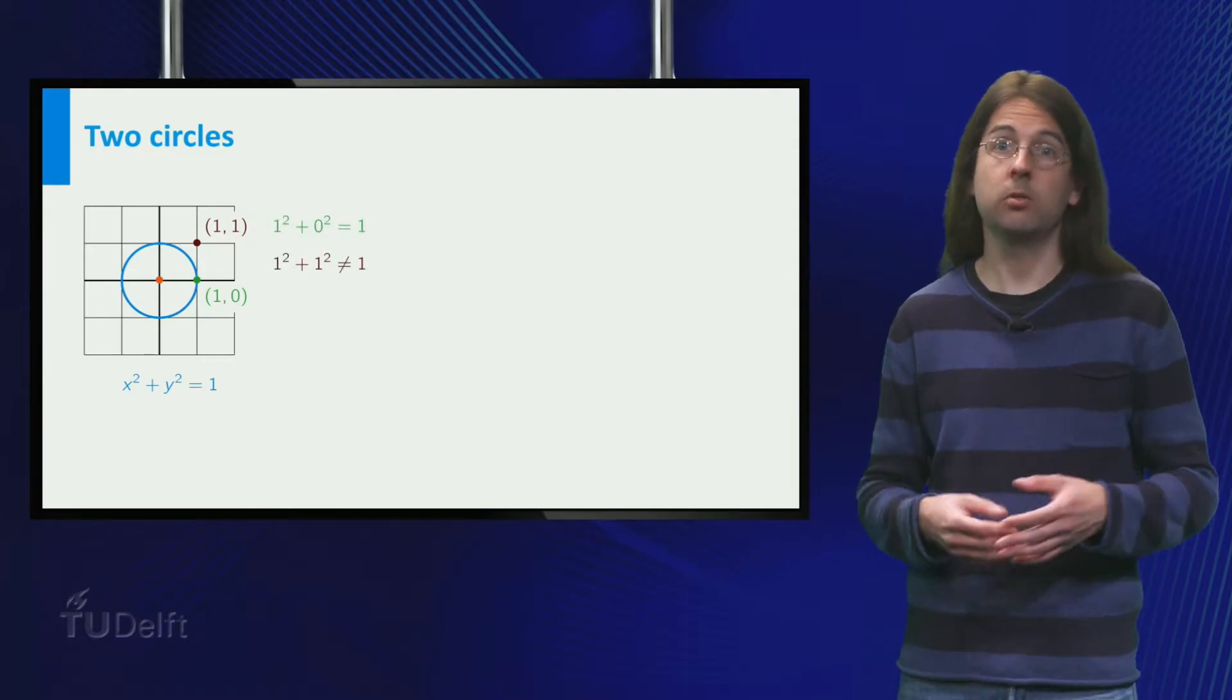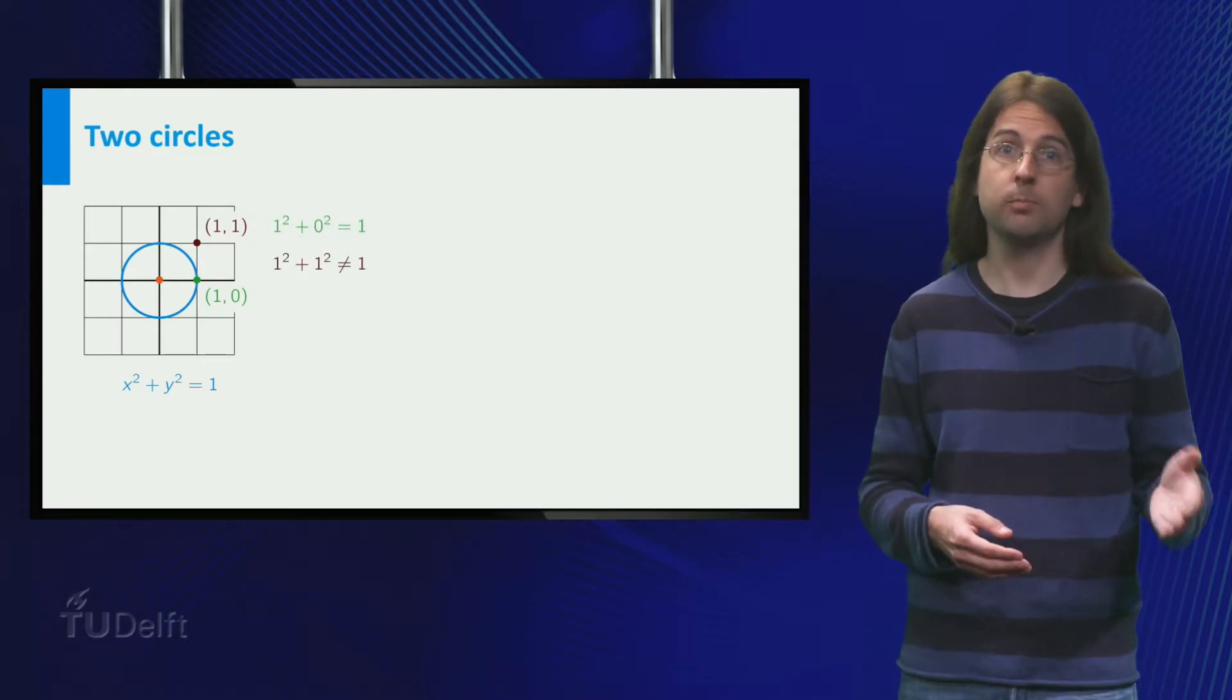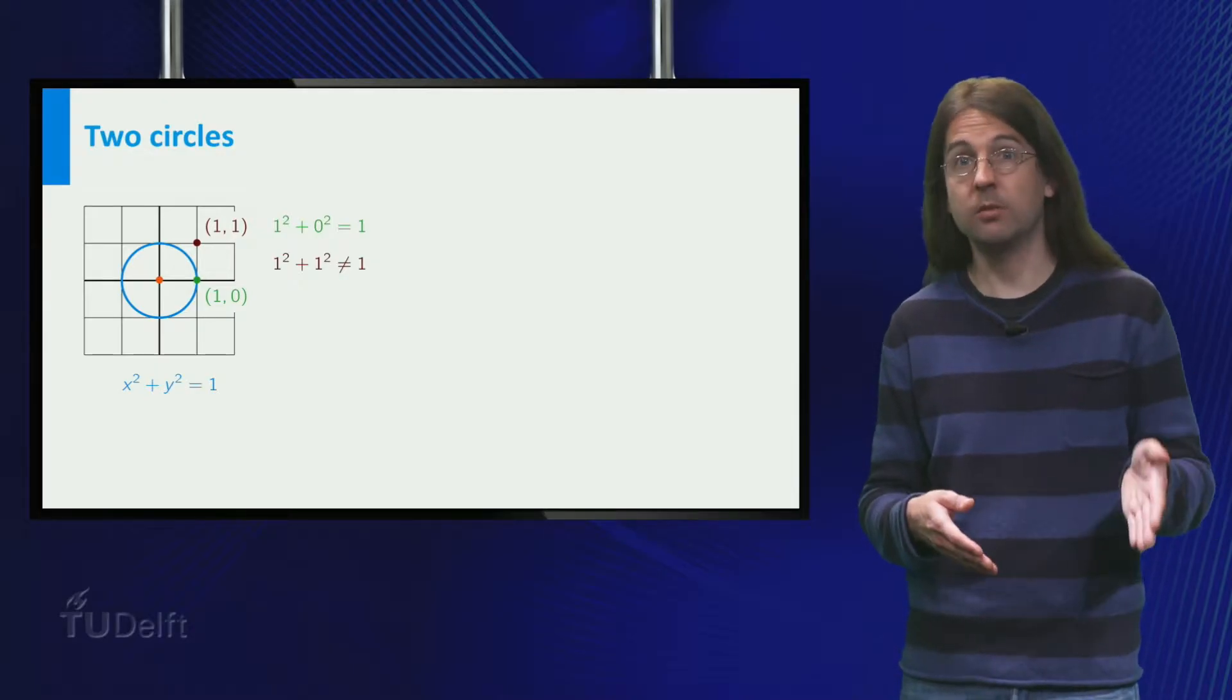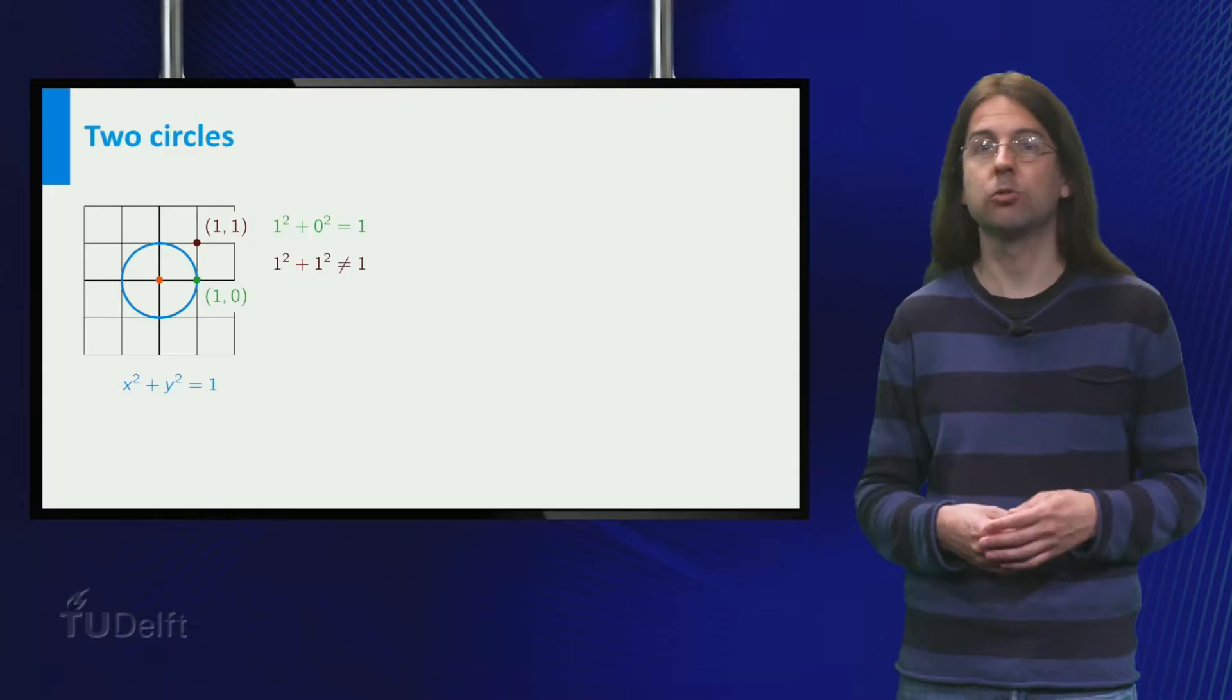So 1, 0 is on the circle as 1 squared plus 0 squared equals 1, but 1, 1 is not as 1 squared plus 1 squared is not equal to 1.